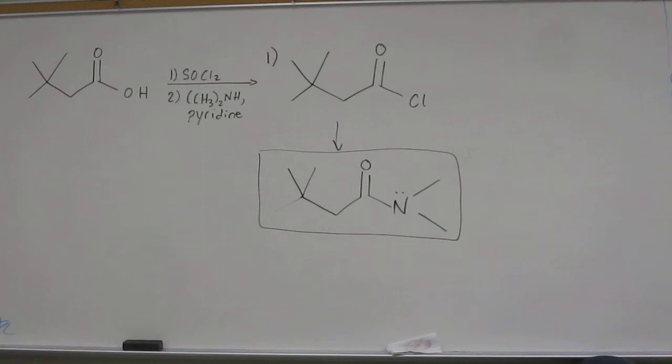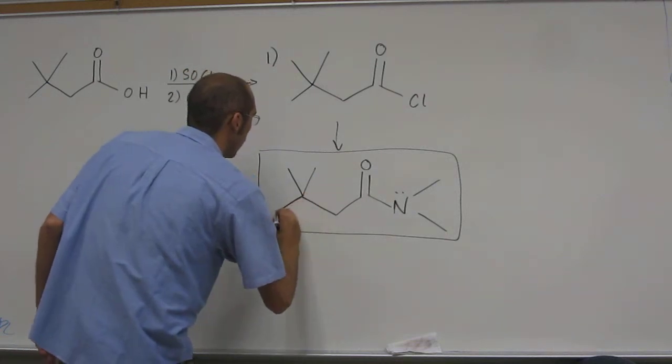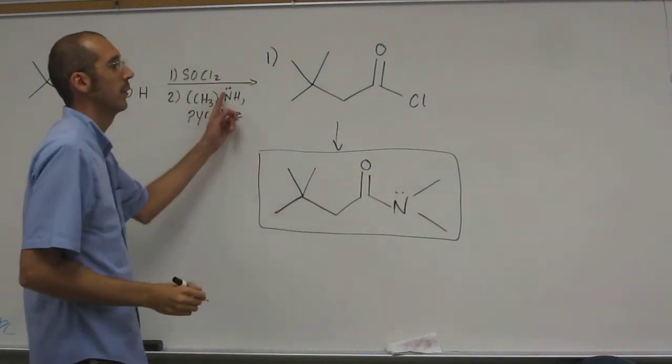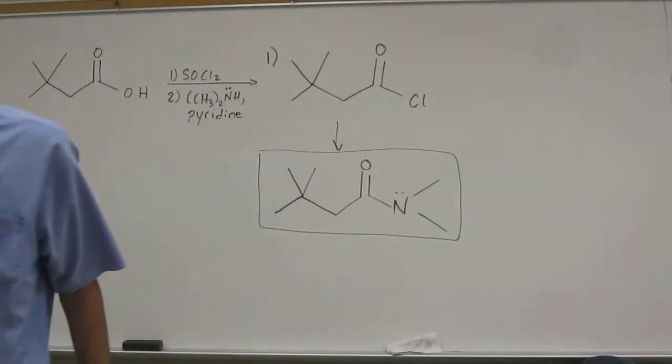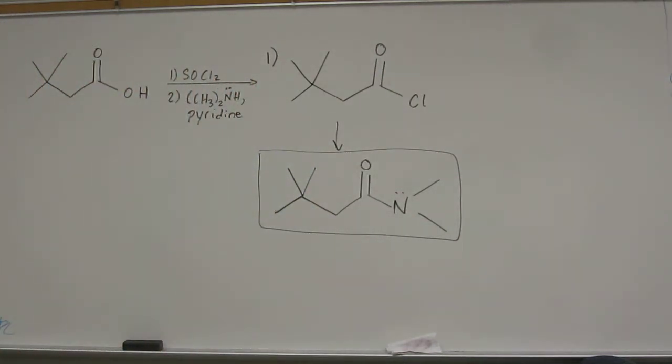Does that make sense? So again, it's because you've got very nucleophilic nitrogen, very electrophilic carbon, and the chlorine wants to leave - the chlorine is a good leaving group. Any questions on that one?